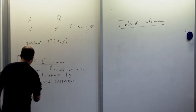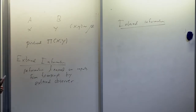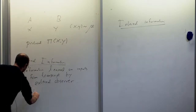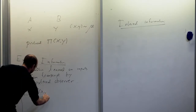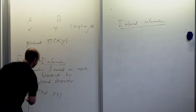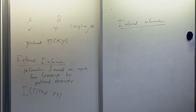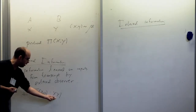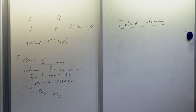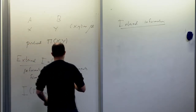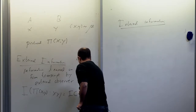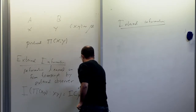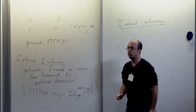Formally, the external information is roughly the mutual information between the protocol π(X,Y) and the inputs (X,Y). Intuitively: we have the inputs and the transcript — a random variable that depends on the inputs and the players' private randomness. How much do we learn about the inputs from viewing the transcript? This defines the information content of the protocol under distribution μ by an external observer.